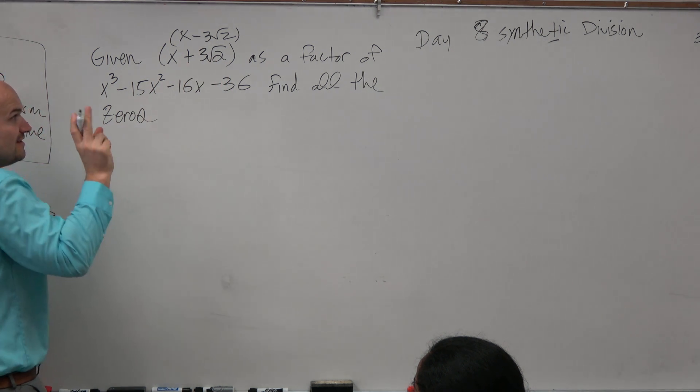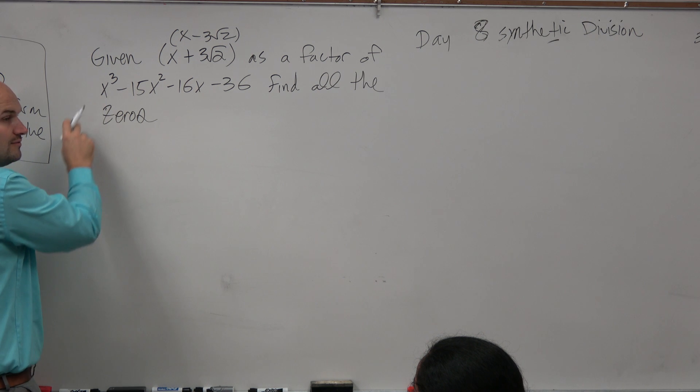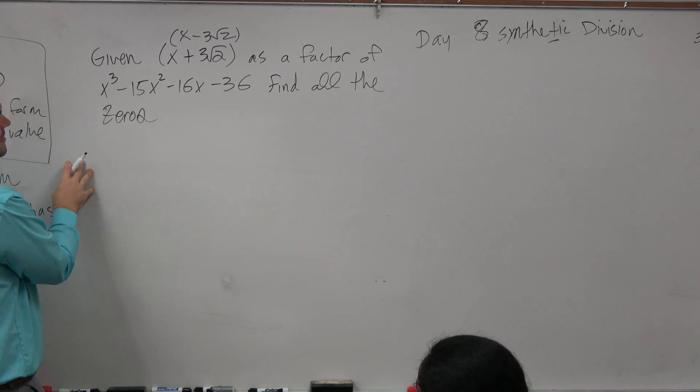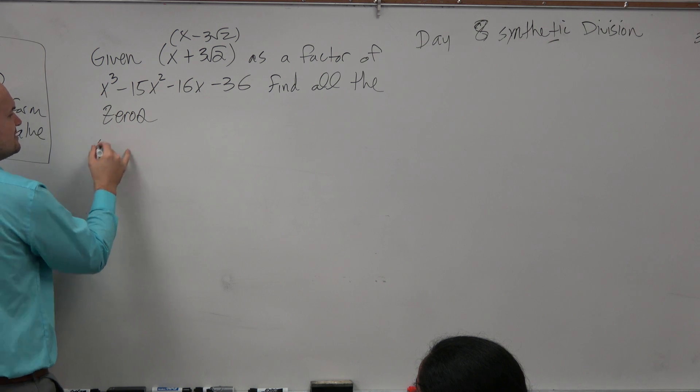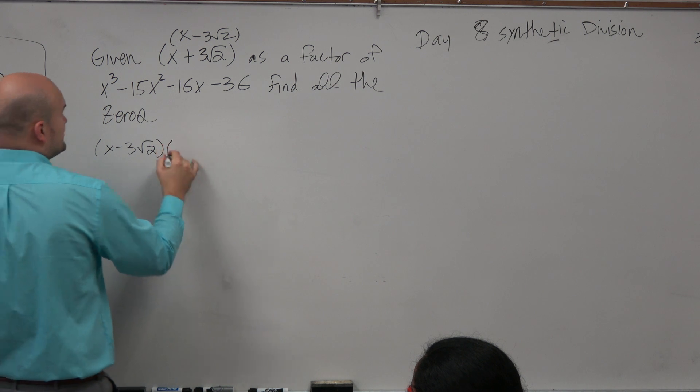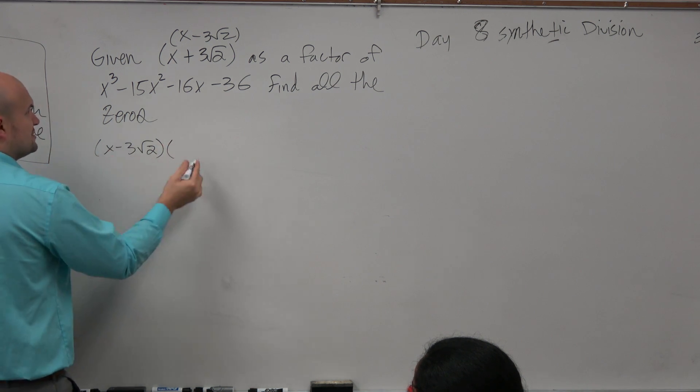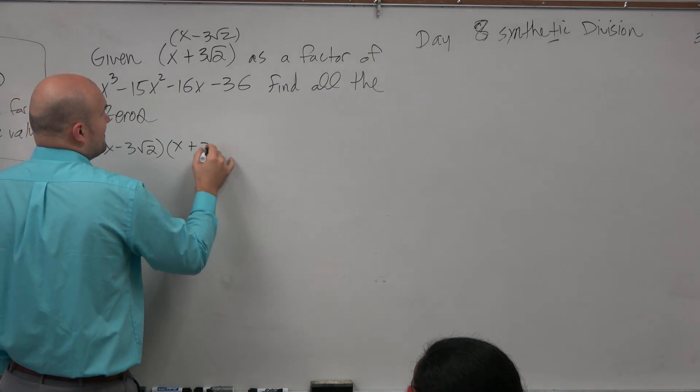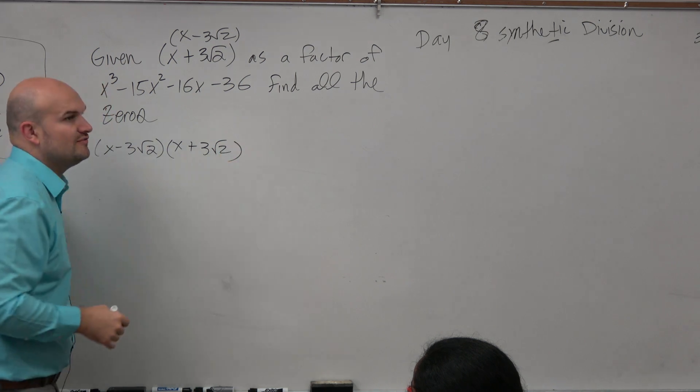Well, now I got two factors out of the way, right? I only need to figure out there's only one more in this case. So what I'm going to do is let's multiply these. I don't want to use synthetic division here, and I don't want to use long division like that. But if I multiply these, I can find another factor, right?